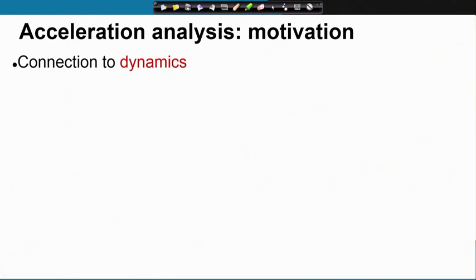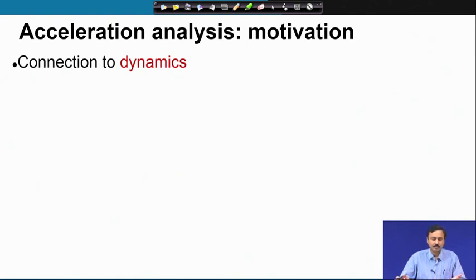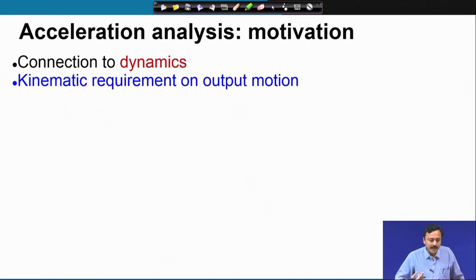Why should we study acceleration analysis? The first reason is its connection to dynamics. Newton's second law requires acceleration — it is the connection between acceleration and force. So, in order to relate to dynamics, we need the acceleration of the center of mass of the links. But there is another reason: to understand the kinematic requirement on the output motion of a mechanism or a robot.